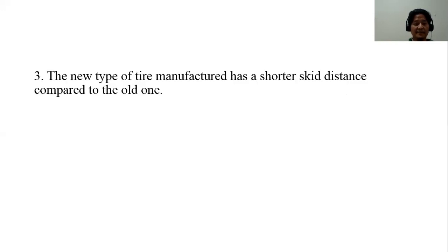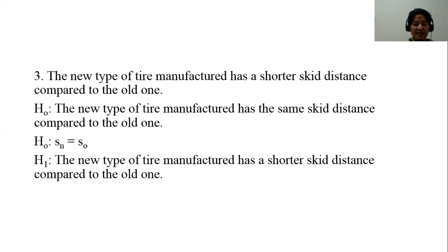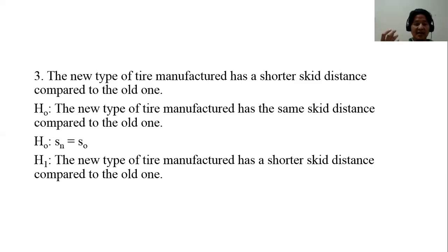Example three: a new type of tire has a shorter skid distance compared to the old one. The null hypothesis says the skid distance is the same as before — no change. The alternative hypothesis checks whether the skid distance is shorter.